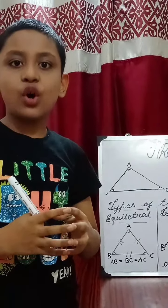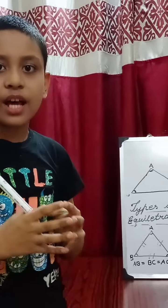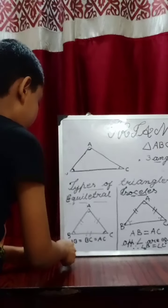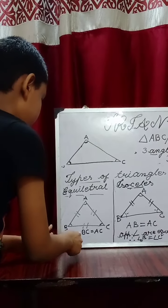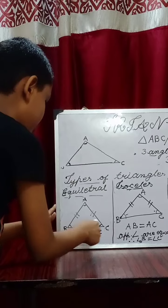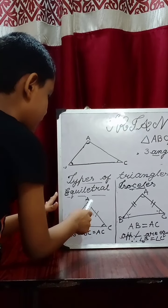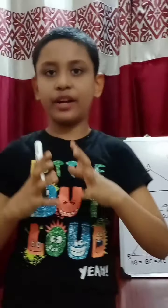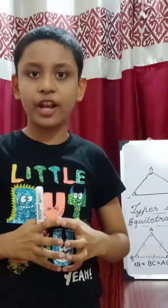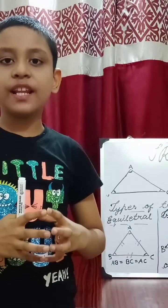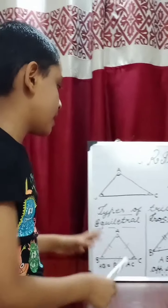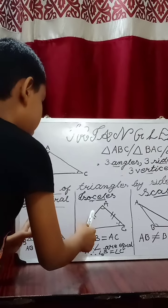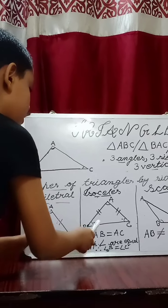In this triangle, AB is equal to BC and it is also equal to AC. Our next type of triangle is an isosceles triangle. An isosceles triangle is such a triangle in which two sides are equal and the third side is not equal.